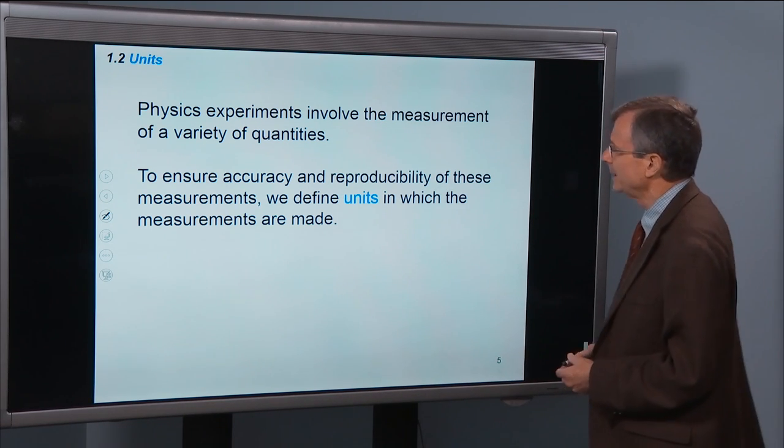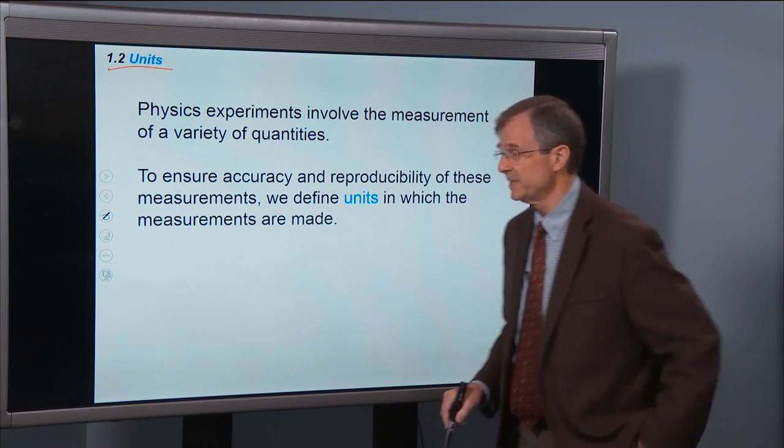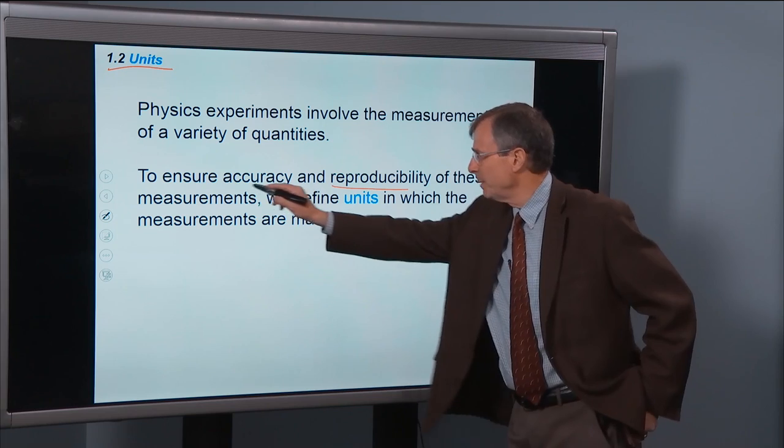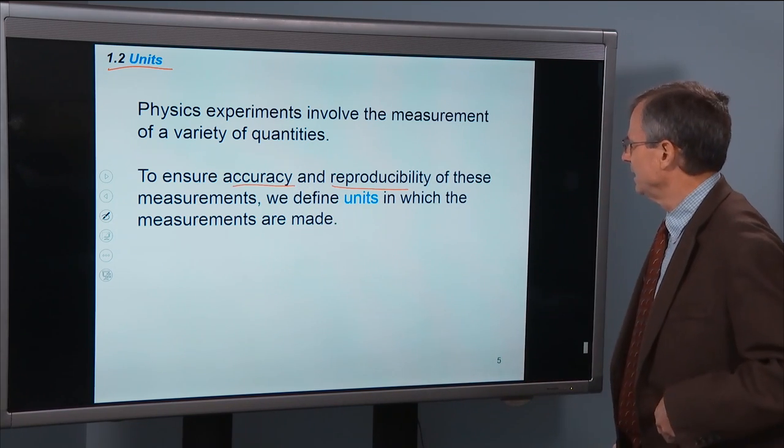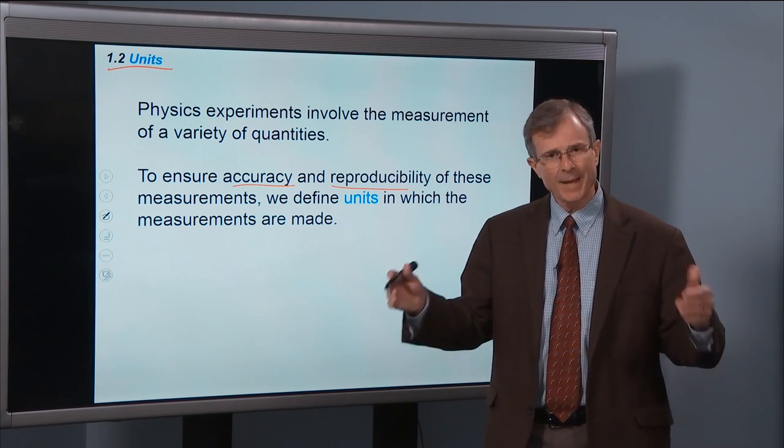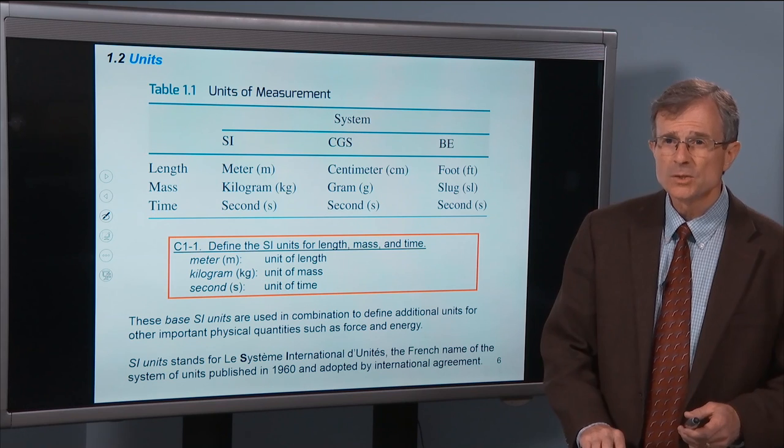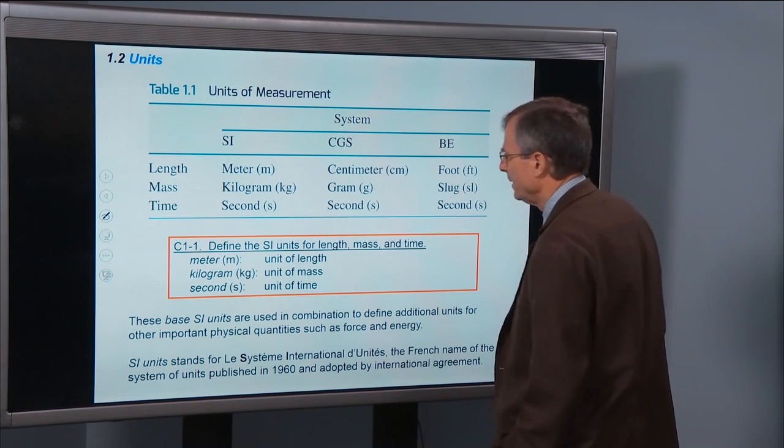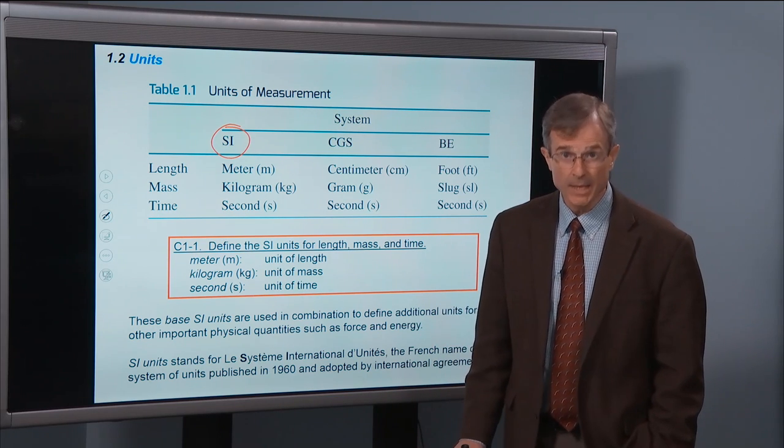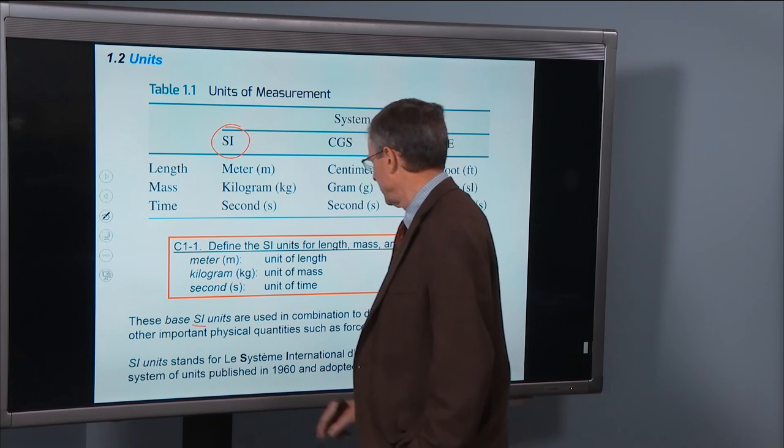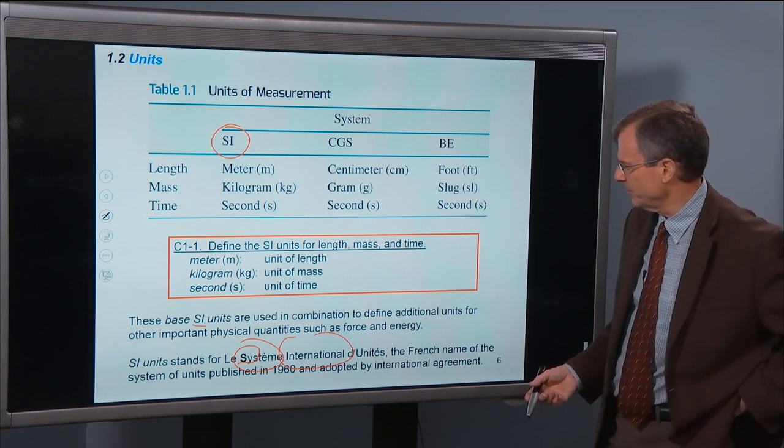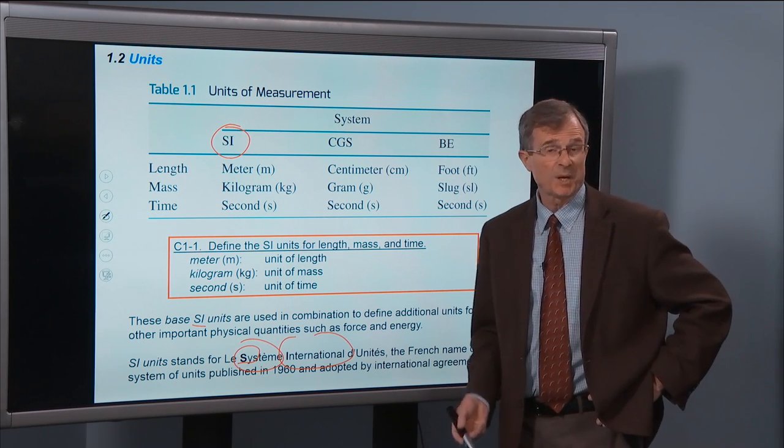Physics experiments. Okay, so now we're on material from section 1.2 of the textbook. Physics experiments involve the measurement of a variety of quantities. To be reproducible and accurate in those measurements, we've got to define some kind of units. If you're going to have a yardstick, is it measured in inches or centimeters or what? We've got to have some standard to measure things against. So hence the need for the definition of units of measurement. We use in this class the so-called SI units. The SI comes from the Système International of units. That's the French name of a system of units published in 1960 and accepted by international agreement.